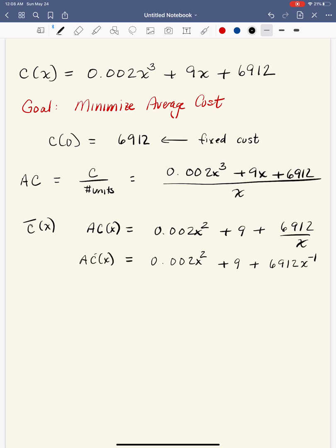So to find the minimum, we take the derivative. So let's see what we get here. So bringing the 2 down, 2 times 0.002 is 0.004. And that's X. The derivative of a constant is 0. And the derivative of the third term is negative.